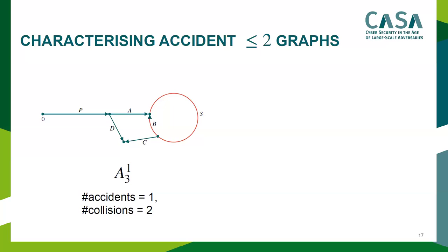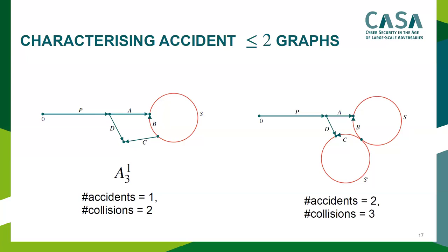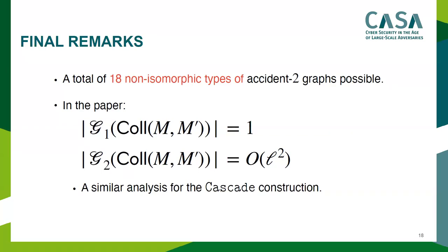An example with equal-length messages using the same core gives two accidents and three collisions. To finalize: in the paper we identified 18 non-isomorphic types of two-accident graphs, showed the bound for one-accident graphs is exactly 1, and the bound for two-accident graphs is O(l-squared). We gave a similar analysis for the cascade construction, which finally proves Lemmas 3 and 4 from the Dodis et al. Crypto 2004 paper.